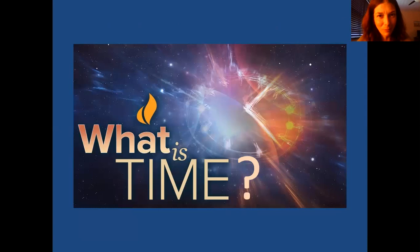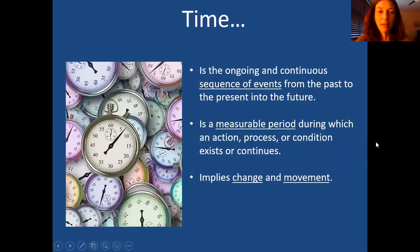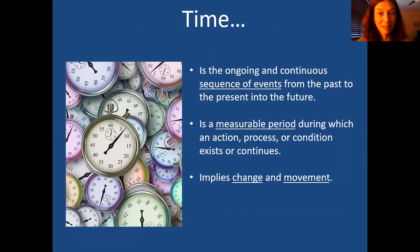So what is time? Time is the ongoing and continuous sequence of events from past to present to future. It's a measurable period during which an action, process, or condition exists or continues. There are different ways to measure it, and it implies change and movement. That's one of the hard parts about time, because we struggle with change, and the passage of time naturally implies some change.